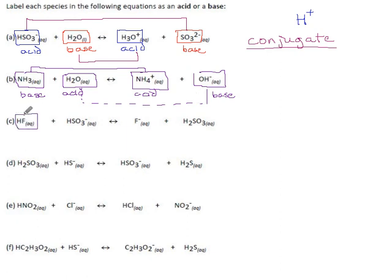HF turns into F minus. What did it do to get there? It gave away a hydrogen. Therefore, HF is an acid. The fluoride ion is its conjugate base. HSO3. This could be an acid or a base. Which one is it now? Well, what did it do? It gained a hydrogen. That means it was a base over here. It acquired one more hydrogen and turned into H2SO3, which we would call its conjugate acid.